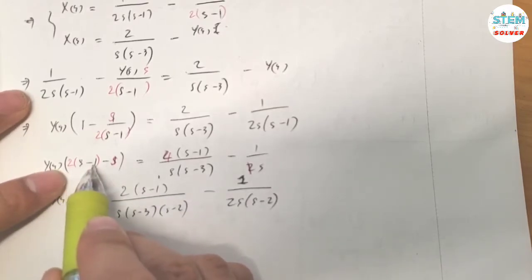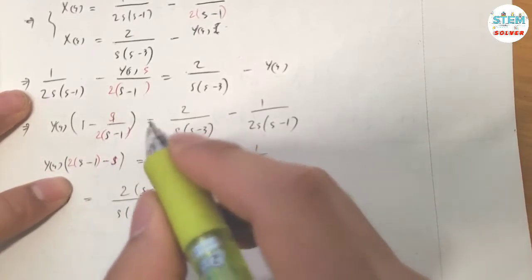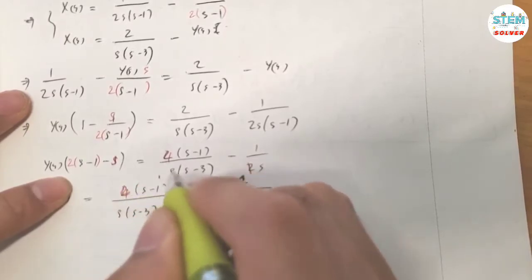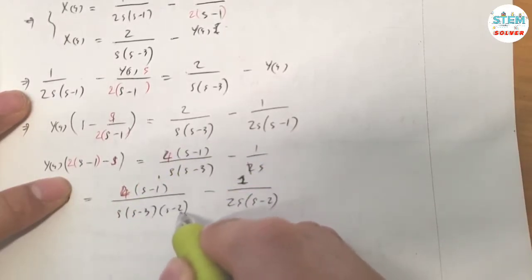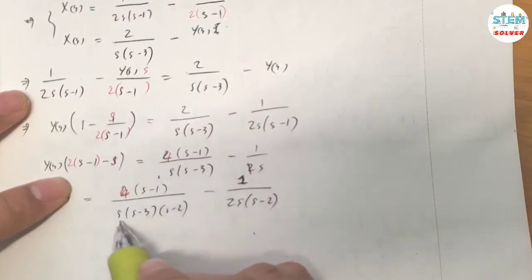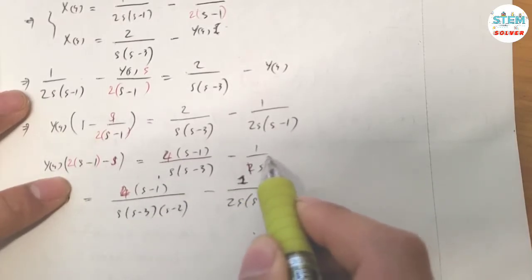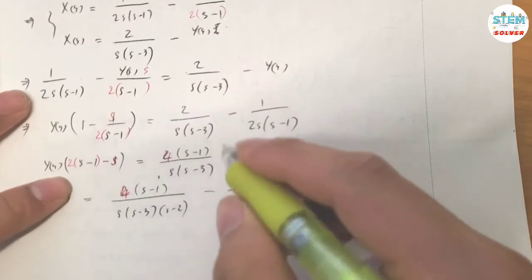Expanding: 2S minus 2 becomes 2S minus S equals S minus 2. So the left side is S minus 2, and the right side has 4 over S(S minus 3) over S minus 2. Sorry for the mess — it works out correctly.